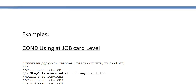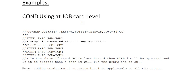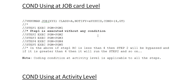The first example is COND used at the job card level. In the job card, COND is coded as COND equal to (4, GT). By default, step one is executed without any conditions. Based on the return code received from step one, the next action is taken. If step one's return code is less than 4, then step two will be bypassed. If it is greater than 4, step two will run. The same condition applies to step three, step four, and step five.